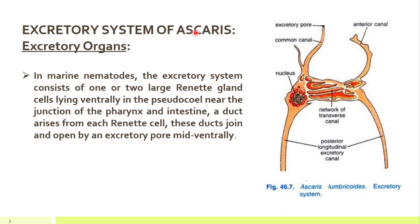Now let's see the excretory system of Ascaris. In marine nematodes, the excretory system consists of one or two large renette gland cells. In the previous phylum we studied — Platyhelminthes, in Fasciola hepatica — the excretory organs were flame cells. But in this phylum, Aschelminthes, the organs of excretion are renette gland cells, lying ventrally in the pseudocoelom, which is the false body cavity.